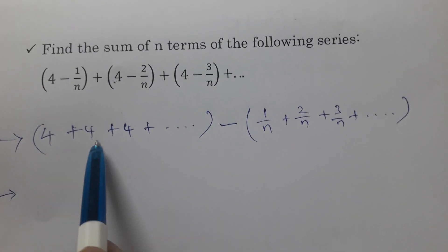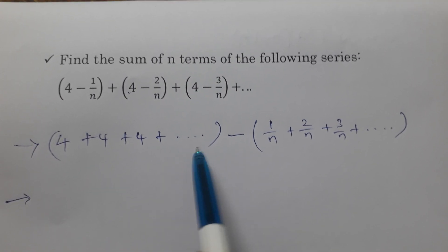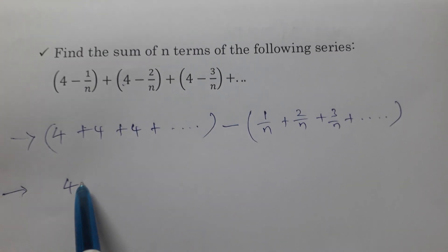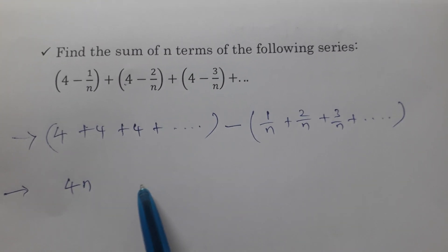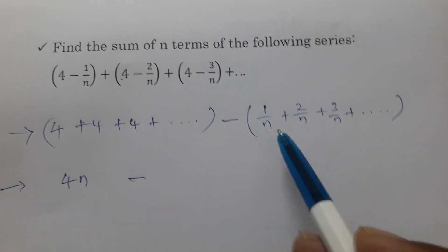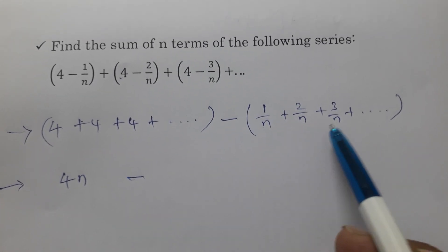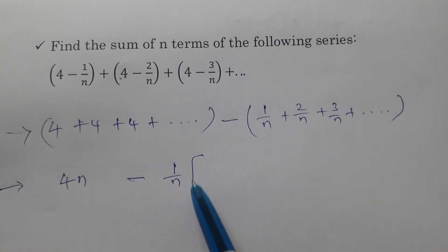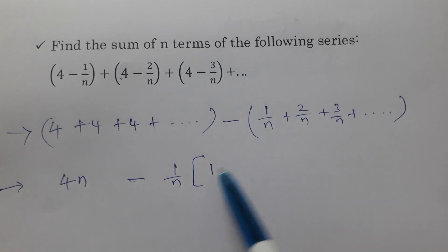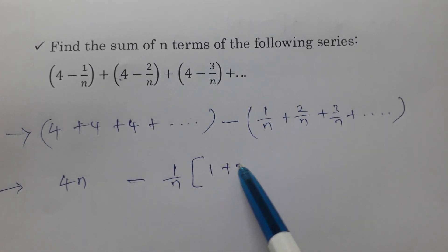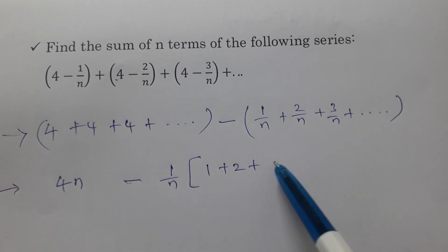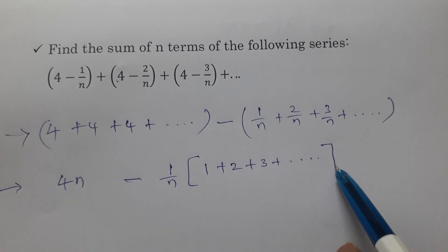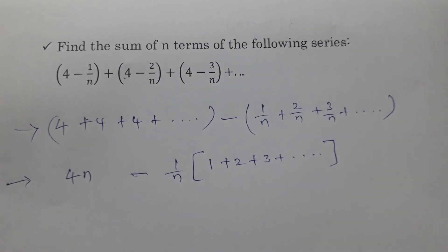4 added n times gives 4n. Then we take 1/n common from the fractional part, giving us 4n minus (1/n) times (1 + 2 + 3 + ... up to n terms).